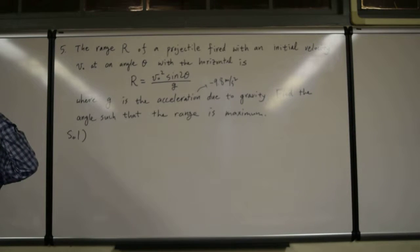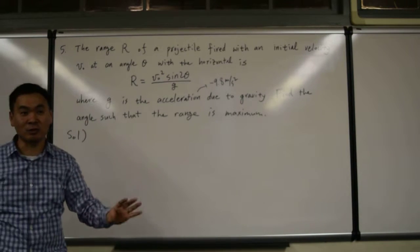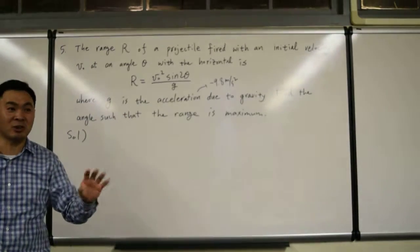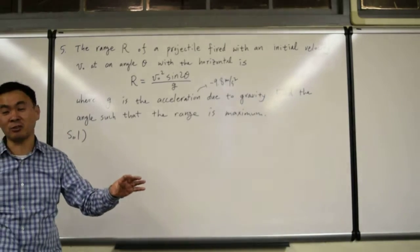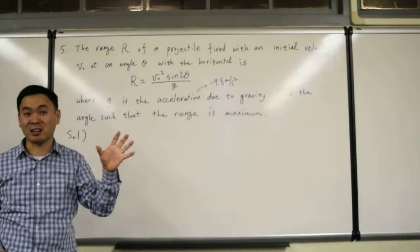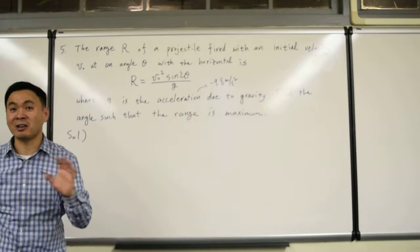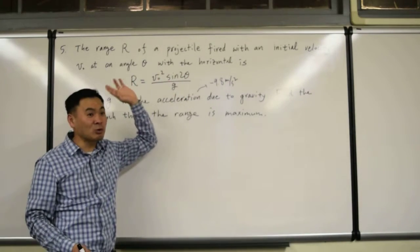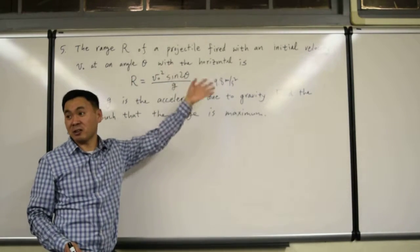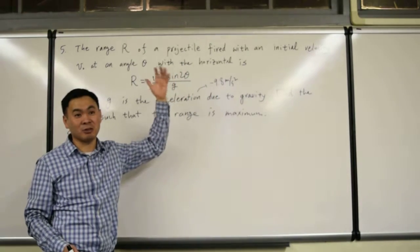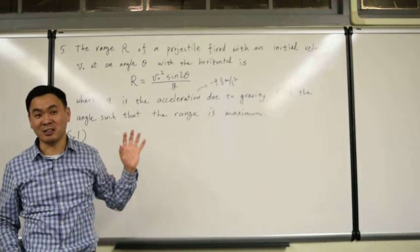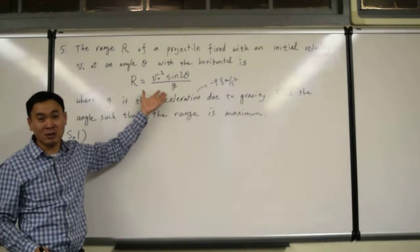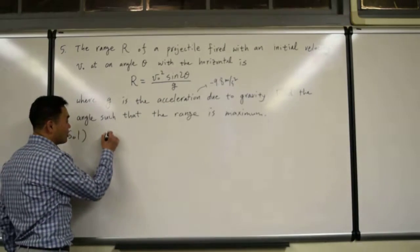And because it's already a function of a single variable, you don't need any constraint. Usually, these optimization questions have the structure where you have the target and the constraint, and usually target is a function of two or more variables, and you solve the constraint to plug it back into the target to make the target as a single variable function. Because that's the only way we know how to differentiate, right? But here, it's already a function of a single variable, so there is no need for figuring out the constraint and solving that for anything and plugging in. That part is not needed here. So it's actually much more easier than it seems. So it's a very easy question. All you have to do is just find the derivative.